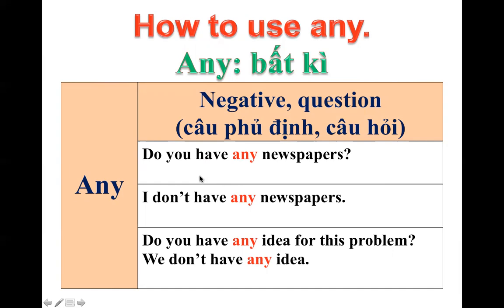Sẽ có một số ví dụ như sau. Do you have any newspapers? — bạn có bất kỳ tờ báo nào không? I don't have any newspapers — tôi không có bất kỳ tờ báo nào. Do you have any idea for this problem? — bạn có bất kỳ ý kiến nào cho vấn đề này không? We don't have any idea — chúng tôi không có ý kiến gì hết. Vậy thì các bạn nhớ là ANY dùng trong câu hỏi và câu phủ định.